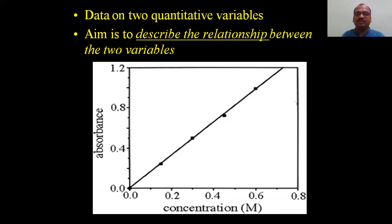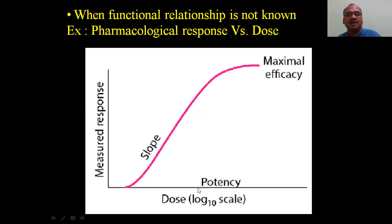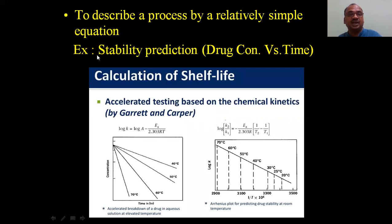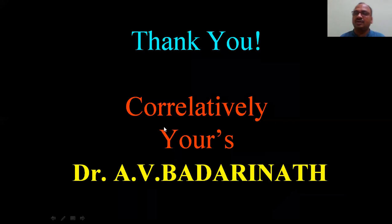Where do we use SLR? In the pharmacy field we apply SLR in various ways — for example, describing the relationship between concentration and absorbance. From a standard curve, if the lecturer gives an unknown sample, we determine concentration from absorbance. In pharmacology, dose-response curves use these techniques. In stability studies, SLR is used to determine shelf life and expiry date of drugs using the Arrhenius theory in accelerated stability studies, and also in pharmacokinetic data such as absorption, distribution, and metabolism kinetics. Thank you.